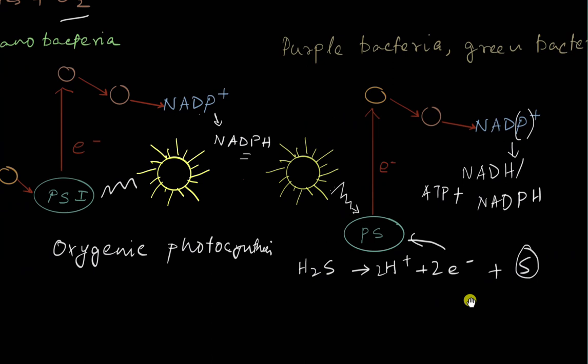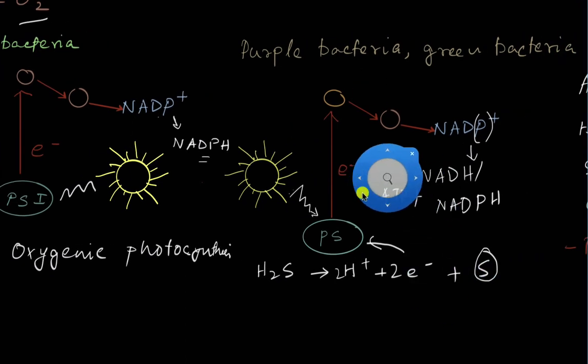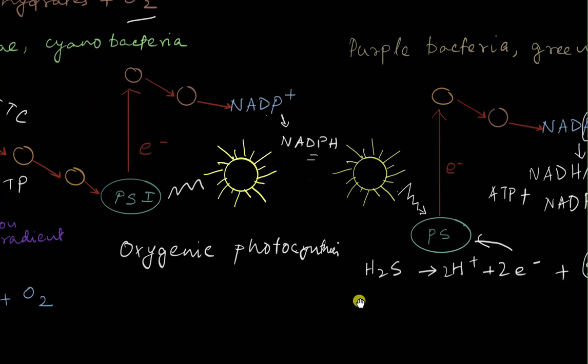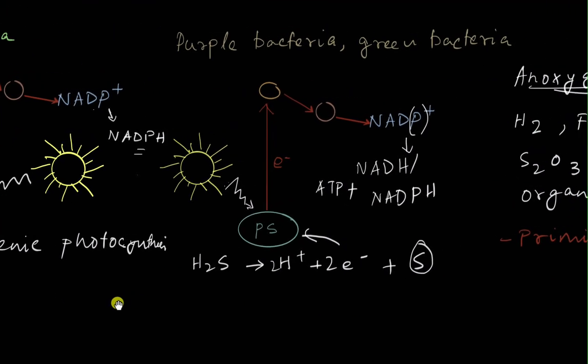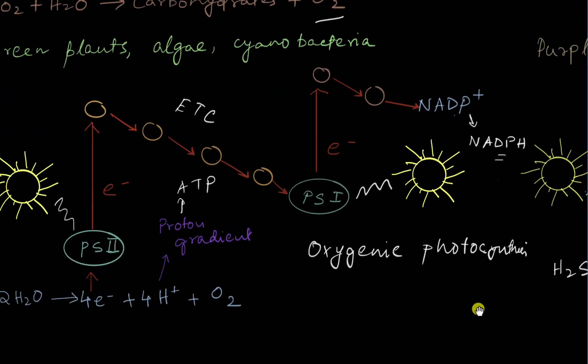So there is only one type of photosystem in the anoxygenic type and there are two photosystems. And see how much more complicated and more sophisticated it is, the oxygenic photosynthesis. So this shows that this is more recent. Of course there are other genetic studies, analyses have been done, which shows that this is more recent. Oxygenic photosynthesis in fact has evolved from anoxygenic photosynthesis. But thankfully the oxygenic photosynthesis did evolve. Otherwise life as we know it would not exist.